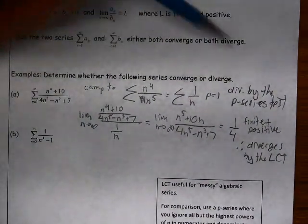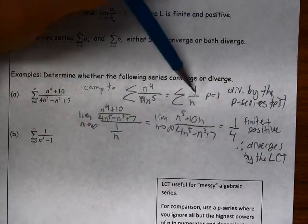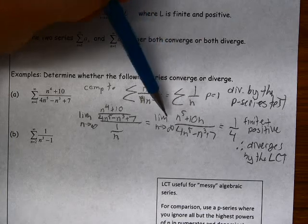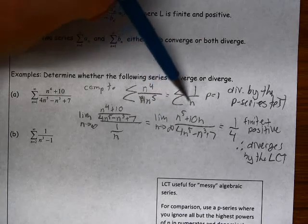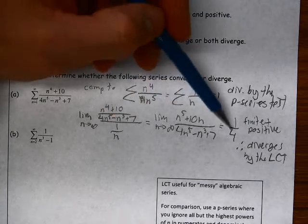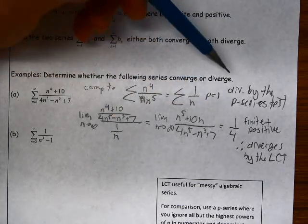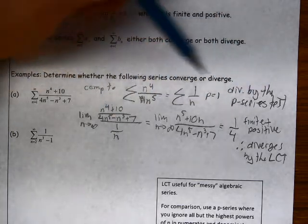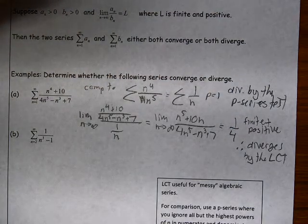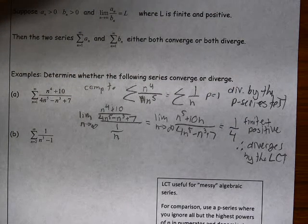In other words, we know that 1 over n diverges, and the limit as n approaches infinity of the ratio of our series to 1 over n is finite and positive. So since the series we used in the ratio diverges, our series also diverges by the limit comparison test.